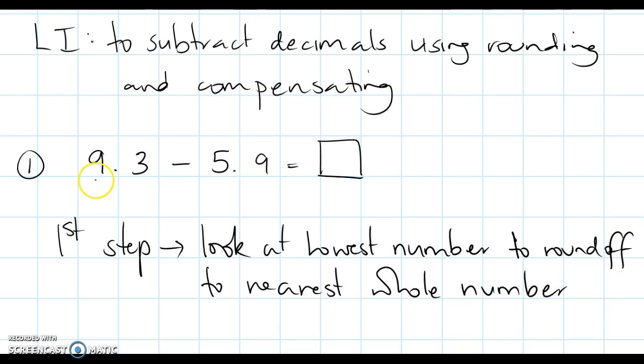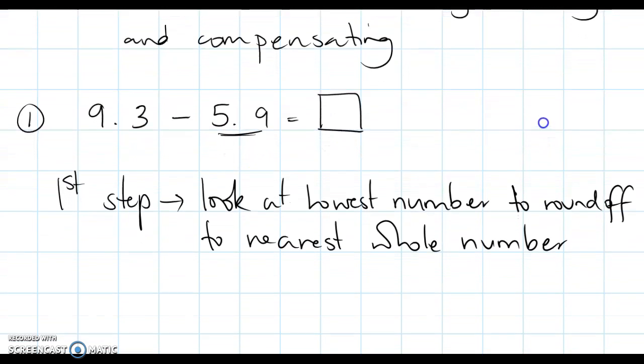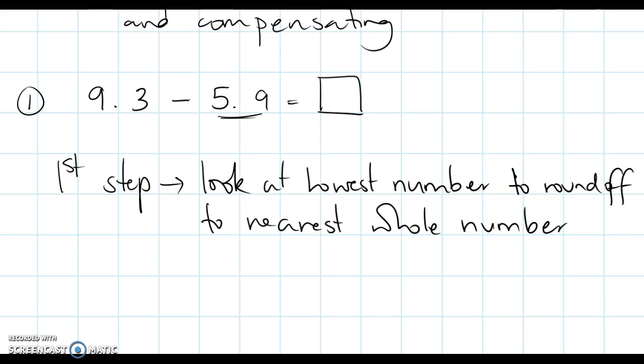Okay, so 9.3, 5.9, which is the lowest number? Lowest number is 5.9. So we need to round off 5.9 to the nearest whole number, which is 6. Round off 5.9 to 6.